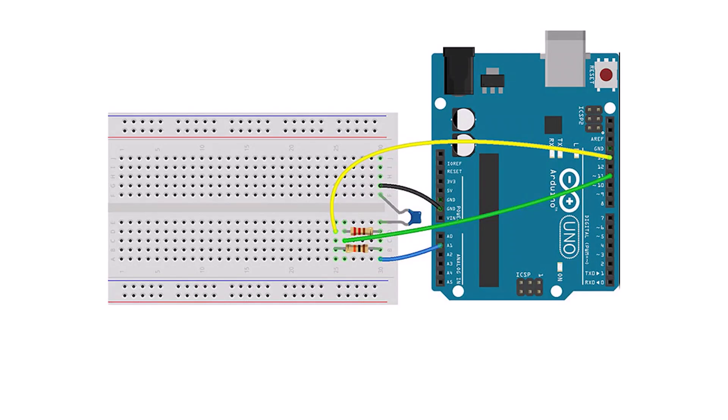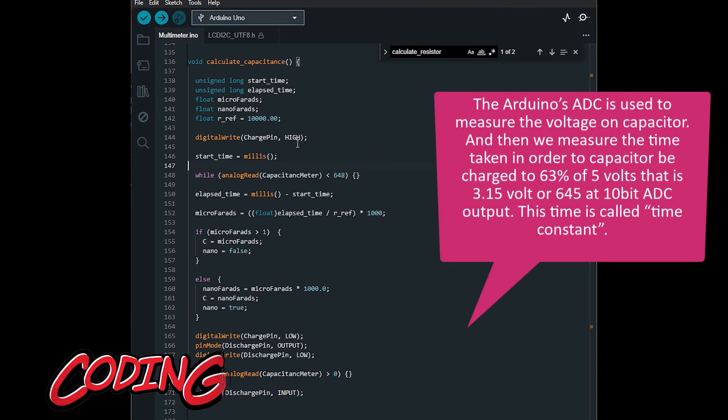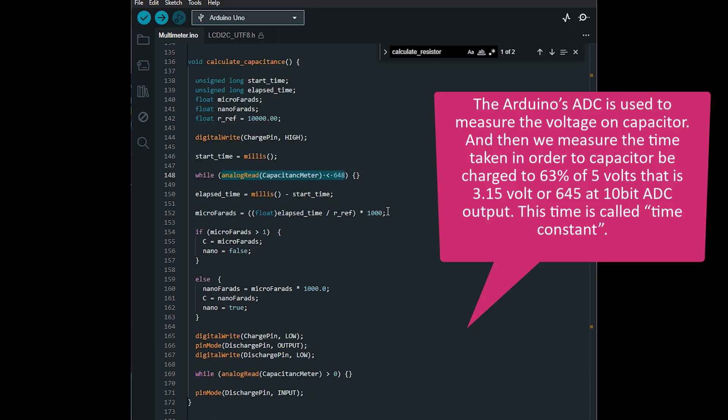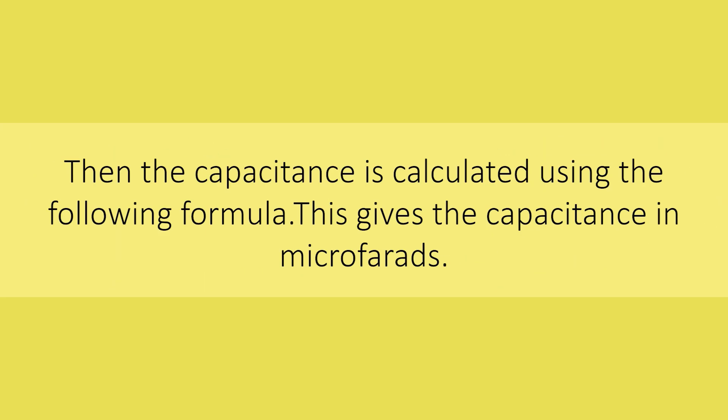After that we will build a capacitance meter. This involves charging and discharging the capacitor through a known resistor and measuring the time it takes for the capacitor to charge or discharge. The Arduino's ADC is used to measure the voltage on the capacitor. And then we measure the time taken in order to capacitor be charged to 63% of 5 volts, that is 3.15 volts or 645 at 10-bit ADC output. This time is called time constant. Then the capacitance is calculated using the following formula. This gives the capacitance in microfarads.